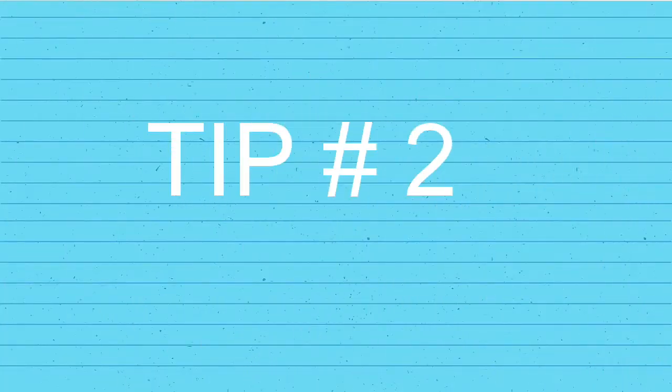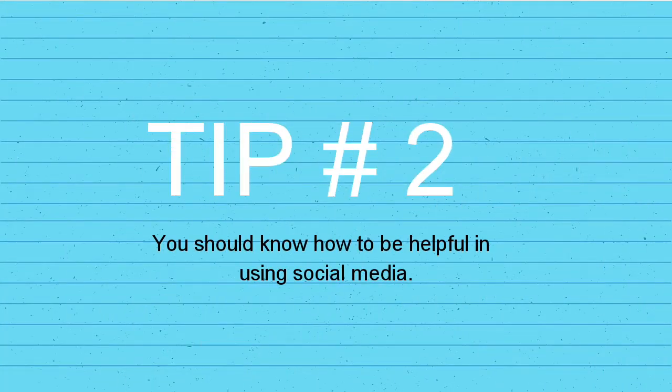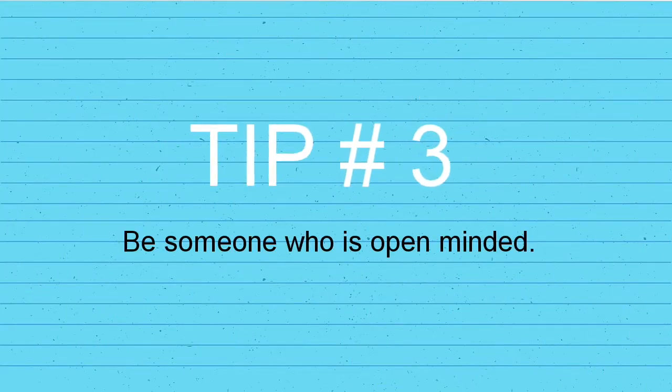Tip number two: you should know how to use social media in a helpful way. A media literate person is critical and helpful. For example, whenever we hear or read someone speaking with wrong grammar, instead of laughing, try to correct them — and that is a good, helpful way.